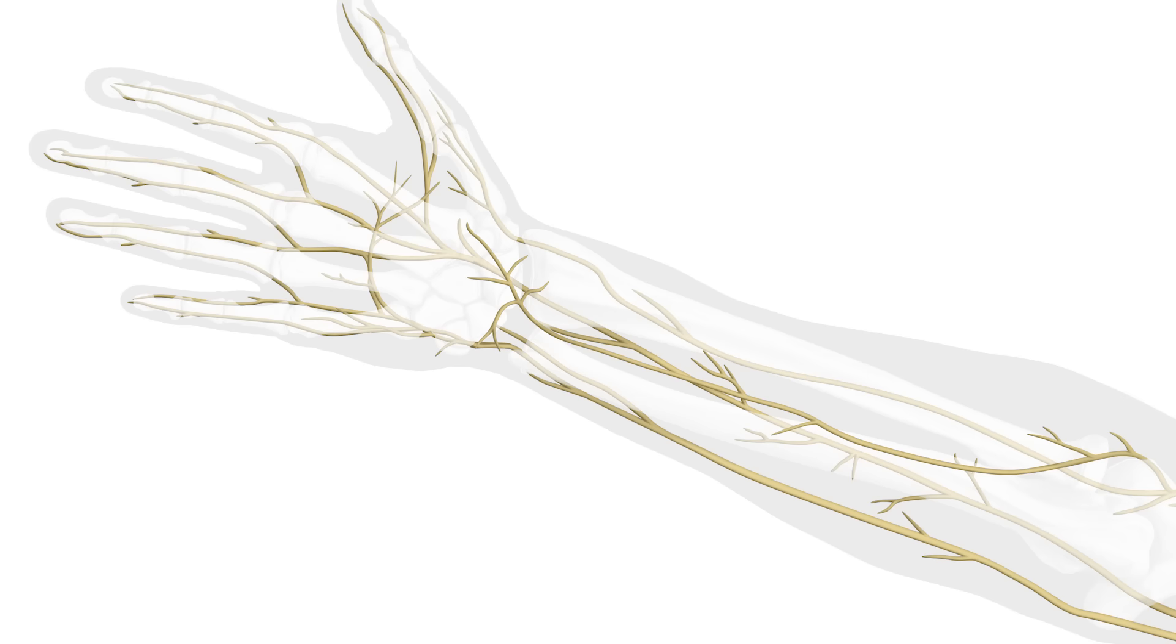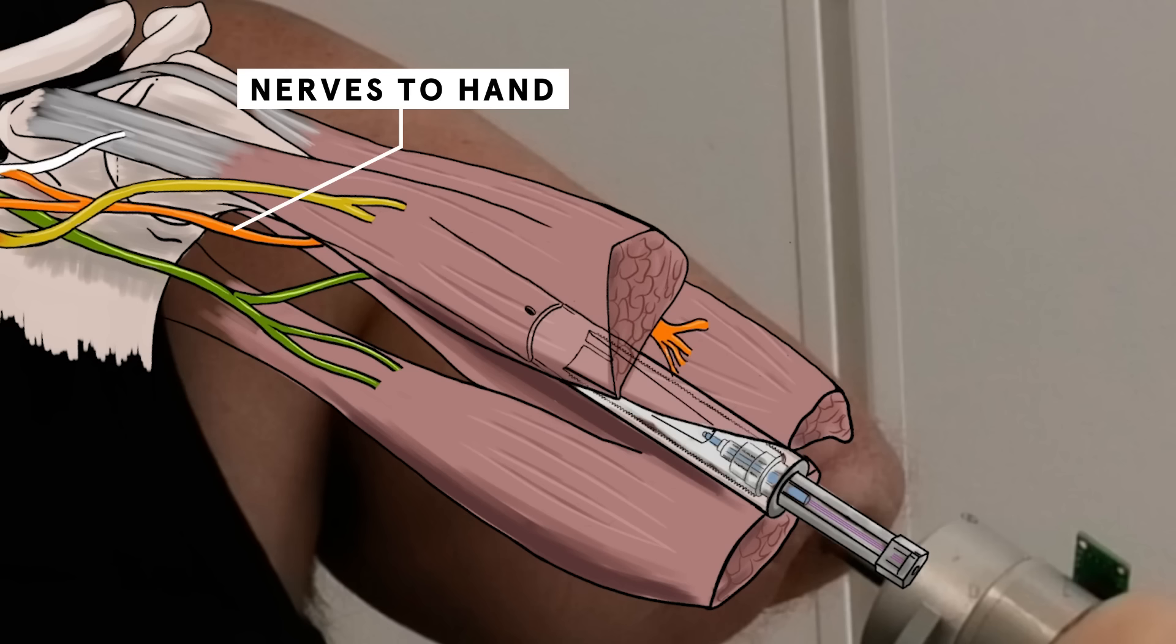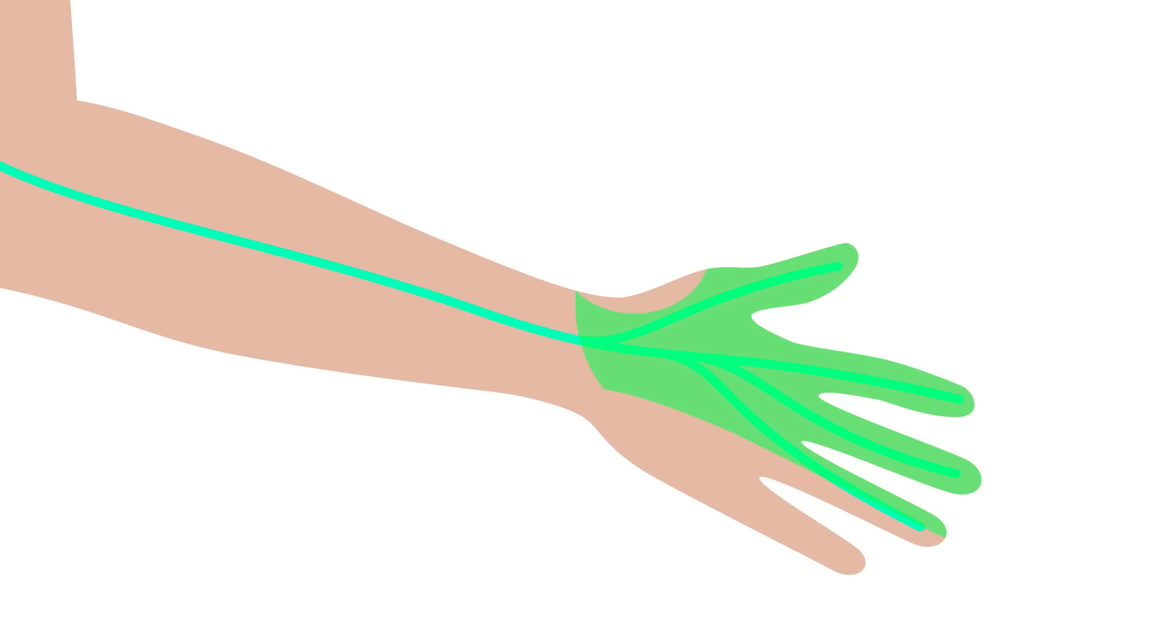So a solution for that is you can take a nerve that used to go to the hand and then you transfer it into one head of the biceps. So then when the patient thinks about closing the hand, this part of the muscle will contract, the short head. There are three big nerves in the arm, the radial, the ulnar, and the median, which allows you to control these three fingers.